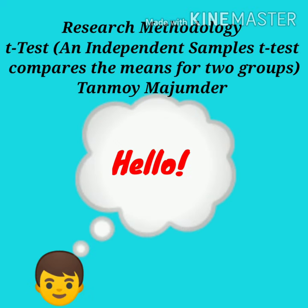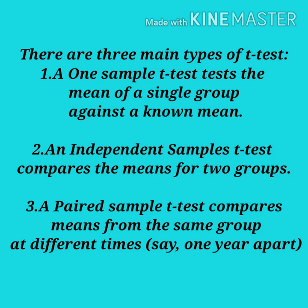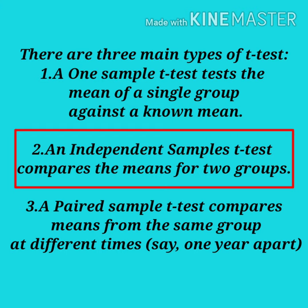Hello students, I am Tanmay Mojumdar. Today I am going to discuss an independent samples t-test, which compares the means for two groups. As I have mentioned, there are three main types of t-test. The first is the one-sample t-test, which tests the mean of a single group against a known mean — I have discussed that in my previous video. The link is in the description box.